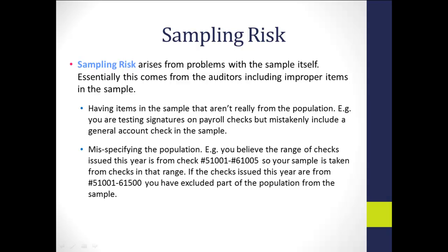If you misspecify the population — for instance, thinking the range of checks is from 51,001 to 61,005 and taking checks from that range, when the end of the range should actually be 61,500 — you've cut off part of the population from being in the sample. Both having items not really from the population and not knowing what the population is are problems detectable upon review but very difficult to catch.